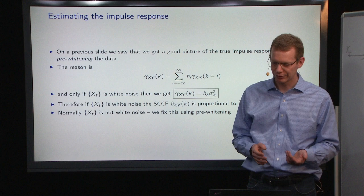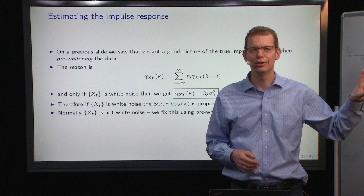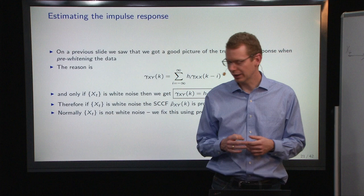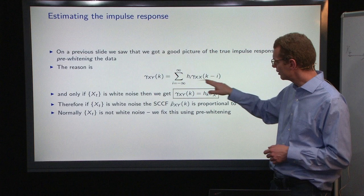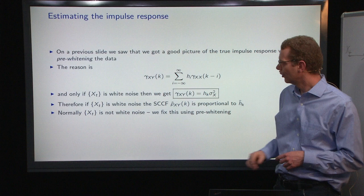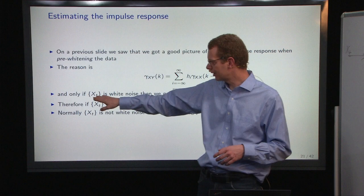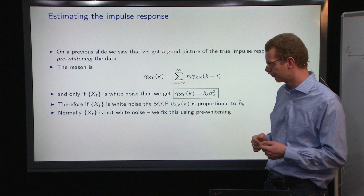So how to estimate these parameters in this system? Well, what I've postulated earlier on is if you do pre-widening, that can help us do the trick. And the reason for that is when you look at the cross-covariance, it contains the autocovariance of the x. So if we could get rid of this, we would be able to estimate the impulse response.